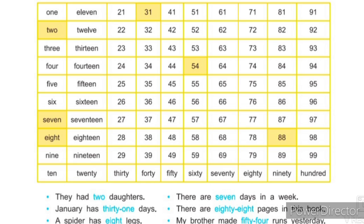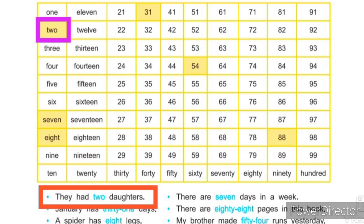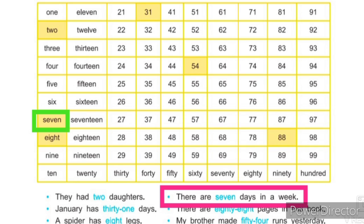The first number is here in a box: 2. The sentence is: 'They had two daughters.' Two — ya sankhyacha vapar ya vakya madhe kelela ahe. Next number is 7, that is in a green box. Look at the sentence: 'There are seven days in a week.' Athavdyache saat divas astat. Seven ya sankhyacha vapar vakya t kelela ahe.